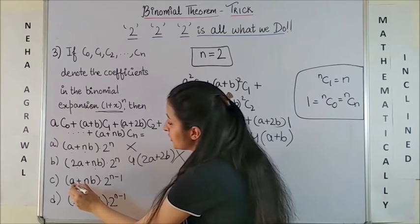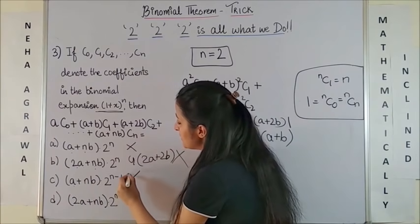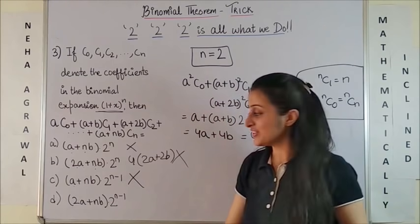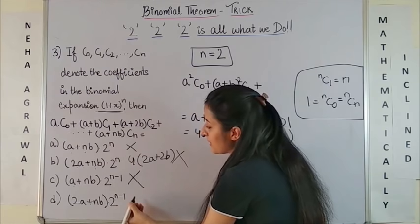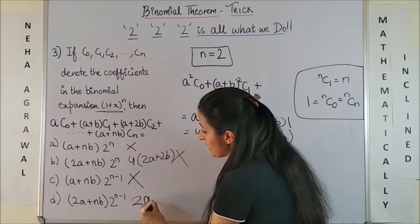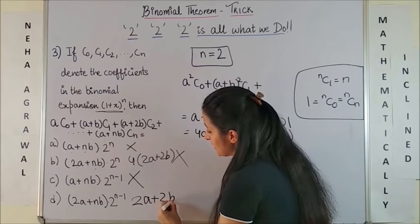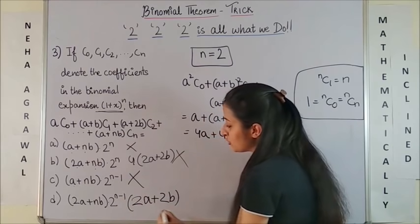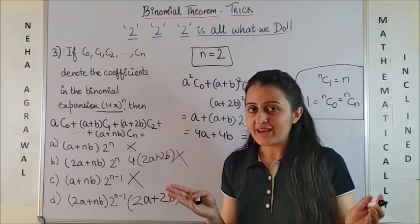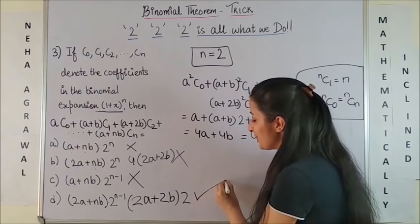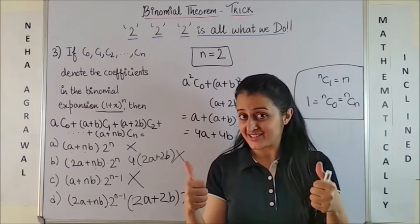Moving to the third one, this gives us a plus 2b. So certainly out of question. And the last one, it is 2a plus 2b into 2 raise to power 2 minus 1. So 2a plus 2b into 2 raise to power 2 minus 1 is 2. If you take this 2 common, you get 4 times a plus b. So this is our answer.